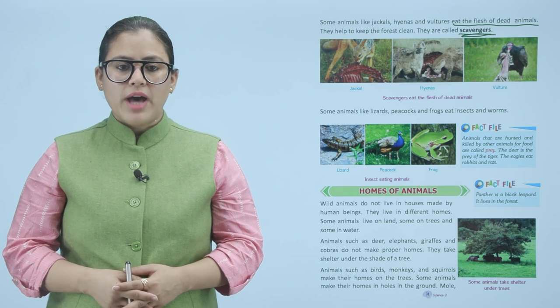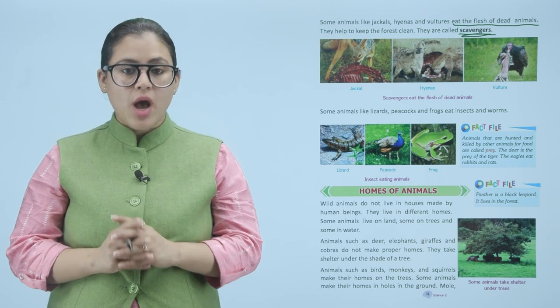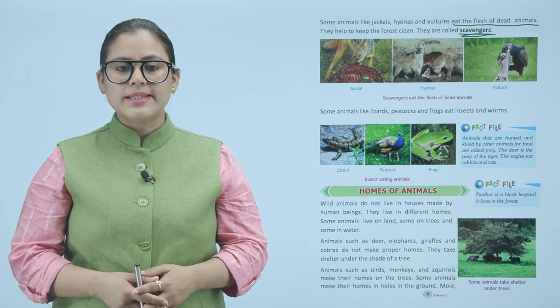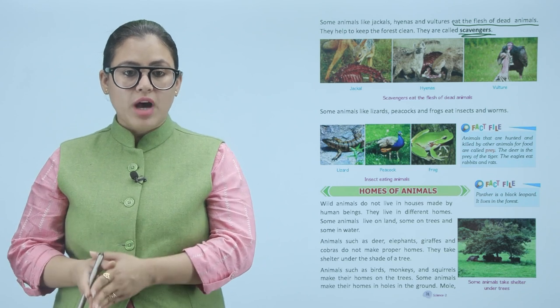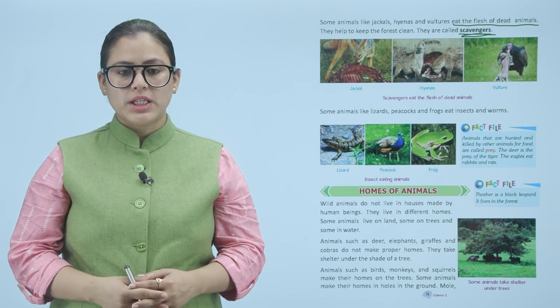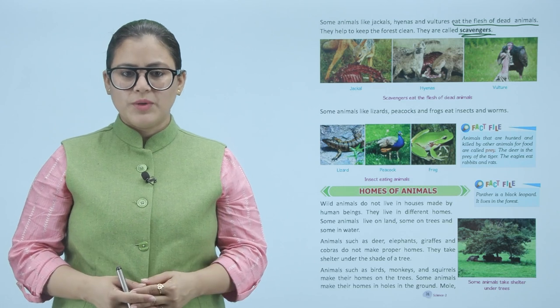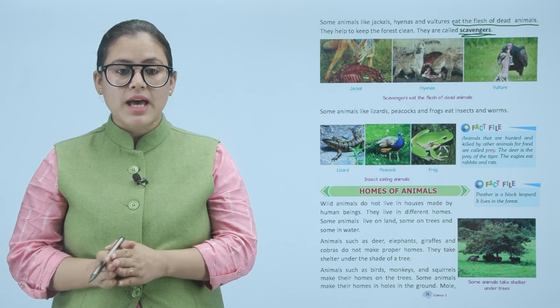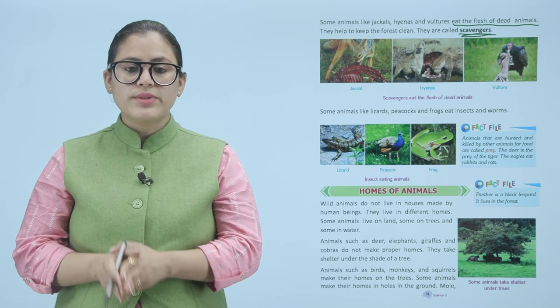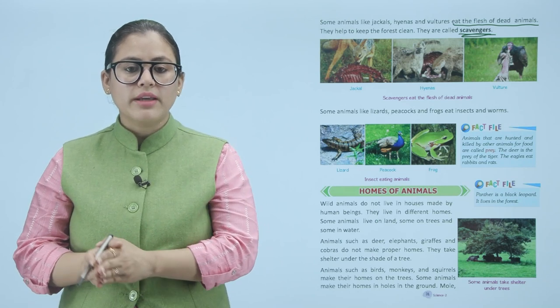Wild animals do not live in houses made by human beings — they live in different homes. Some animals live on land, some on trees, and some in water. Animals such as deer, elephants, giraffes, and cobras do not make proper homes; they take shelter under the shade of a tree. Animals such as birds, monkeys, and squirrels make their homes on trees. Some animals make their homes in holes in the ground.